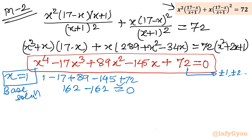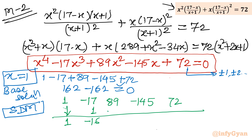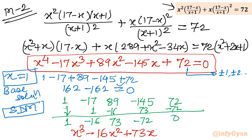Applying synthetic division with x equals 1 and coefficients 1, minus 17, 89, minus 145, 72: the process gives 1, minus 16, 73, minus 72, 0. So the resulting cubic equation is x³ minus 16x² plus 73x minus 72 equals 0.